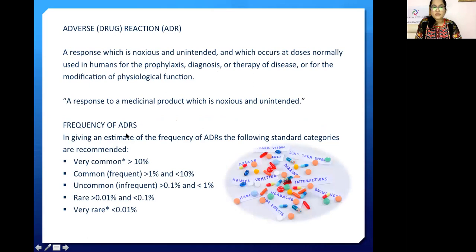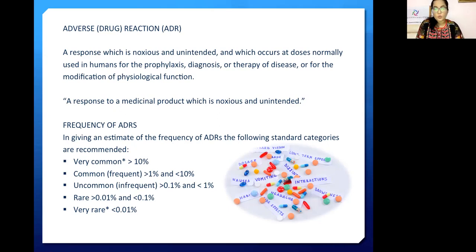Regarding the frequencies of ADRs: very common is more than 10%; common is greater than 1% and less than 10%; uncommon is greater than 0.1% and less than 1%; rare is greater than 0.01% and less than 0.1%; and very rare is less than 0.01%.